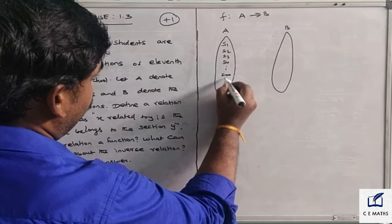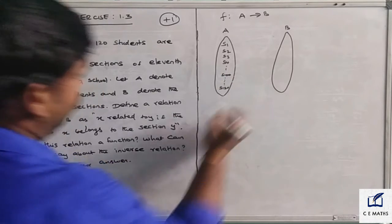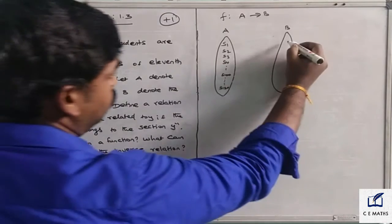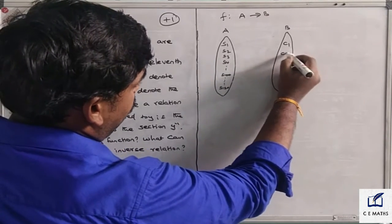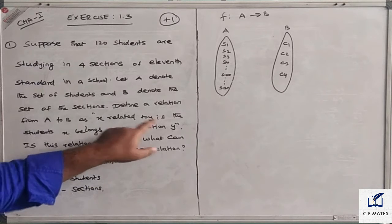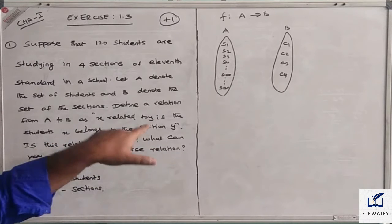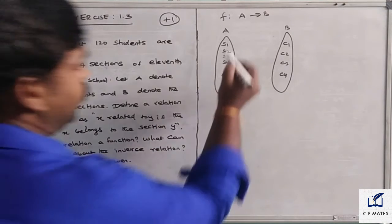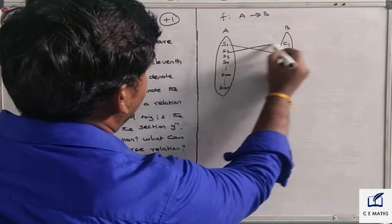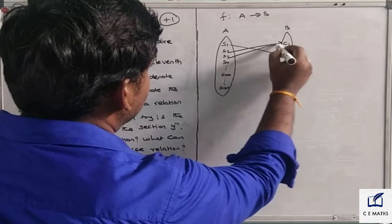S1 to S120, 120 students total. Sections are Class 1, Class 2, Class 3, and Class 4. Students X are related to Y if X belongs to section Y. So S1 student goes to first class, S2 to first, S3 to first, S4 and so on.